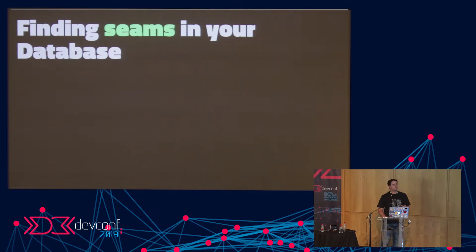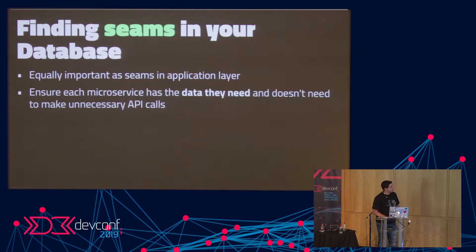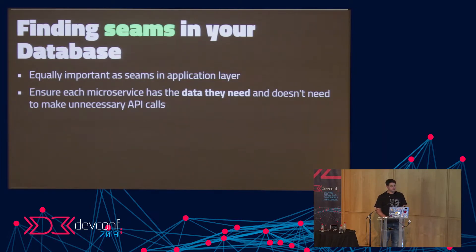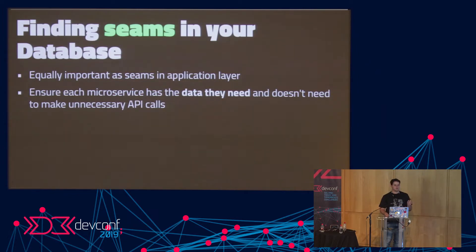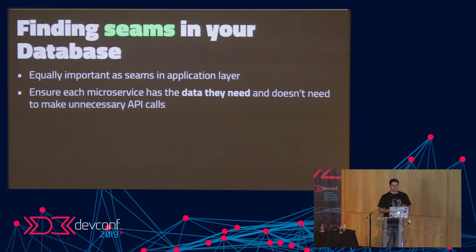Just as we found seams in our application layer, we need to find seams in our database too. One of the really critical things of splitting out your monolith is to make sure that when you design your microservices, the microservice has the exact data it needs for its domain. Because if multiple microservices share data and your orders service has to query another microservice for every single order item, you need to model it so that you have the correct data.